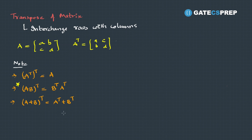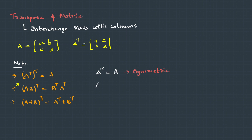A few more things to note: if the transpose of a matrix equals the original matrix, it is called symmetric. If A^T equals negative A, it is called skew-symmetric. If the product of A^T with A equals the identity matrix, then A is called an orthogonal matrix.